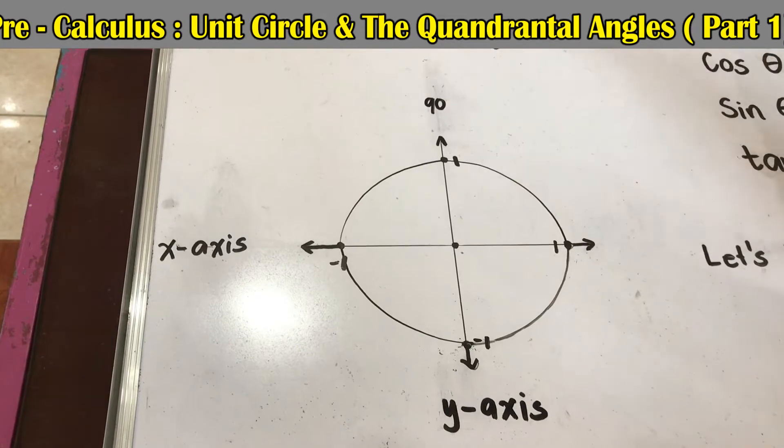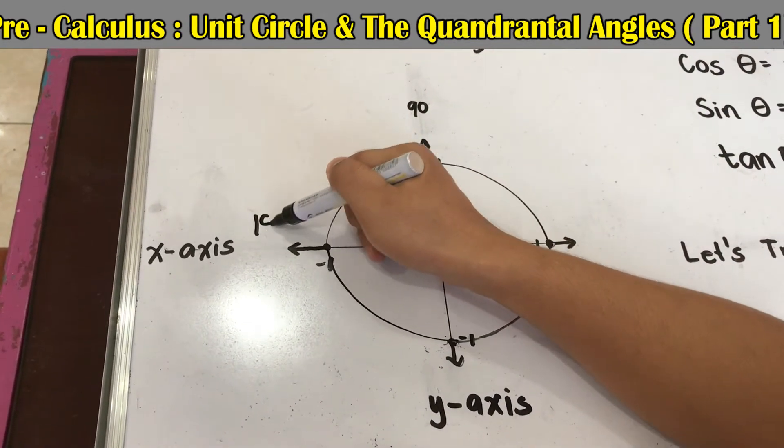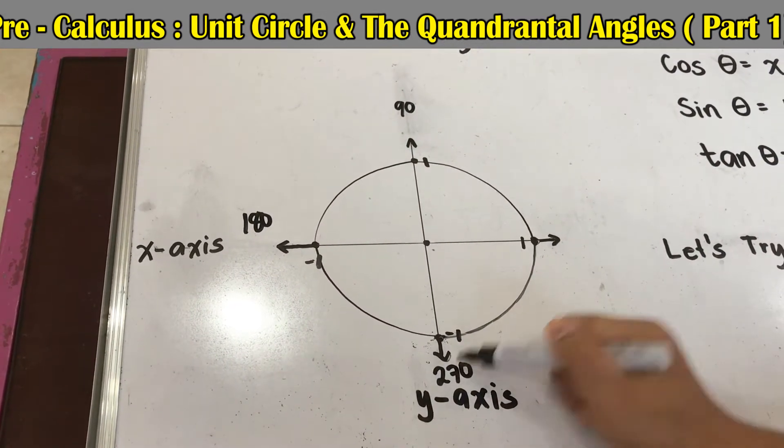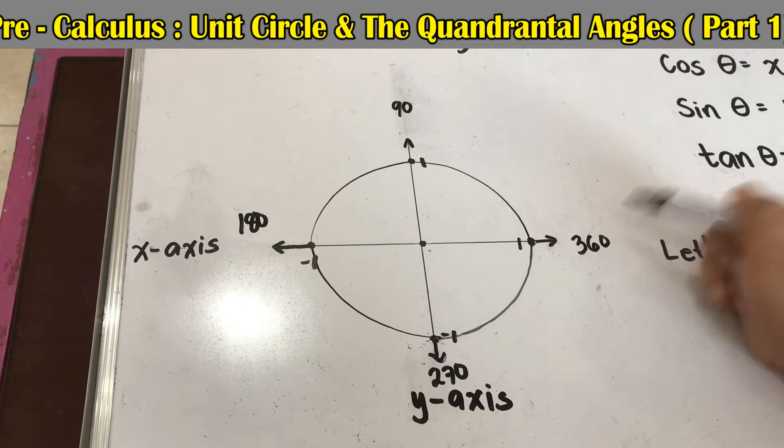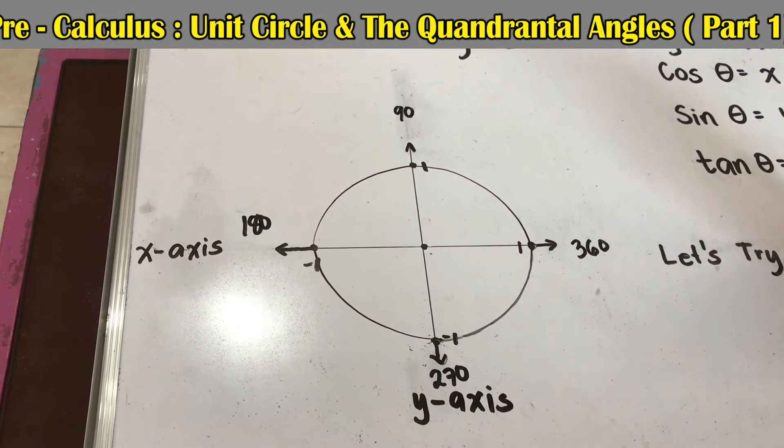Quadrantal angles, because we're going to get the angles in our quadrants. We have 90, 180, 270, 360, and so on.